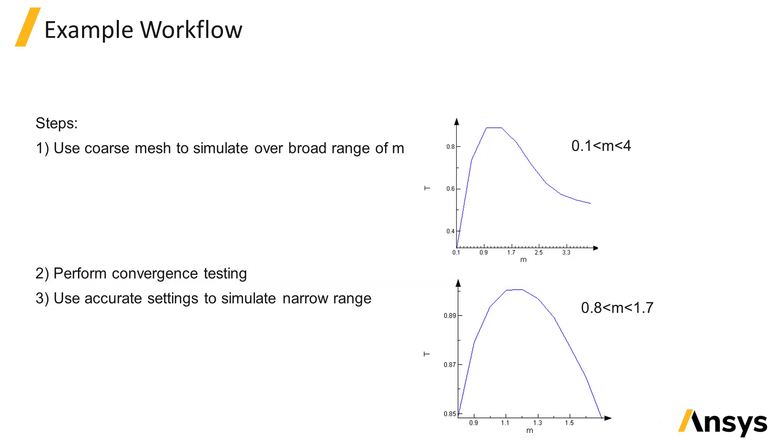Since the higher accuracy settings will require more computation time and memory, it is more efficient to first run the simulations with a coarse mesh to narrow down the range of m values compared to using the high accuracy settings to run all of the simulations over the larger range. We can save time by putting some consideration into the design workflow before starting to run simulations.